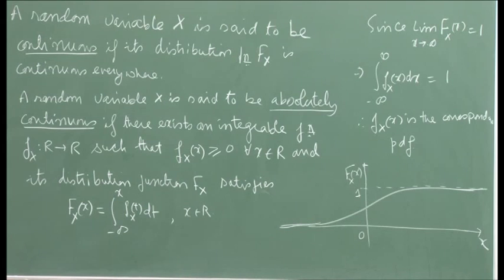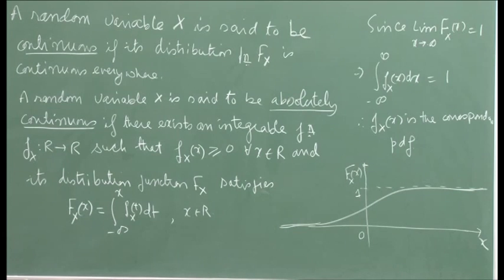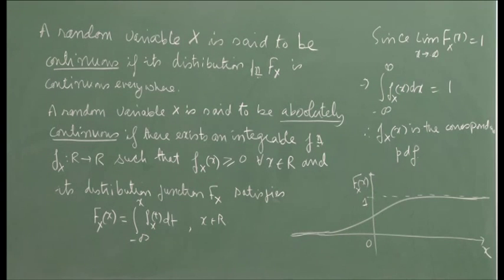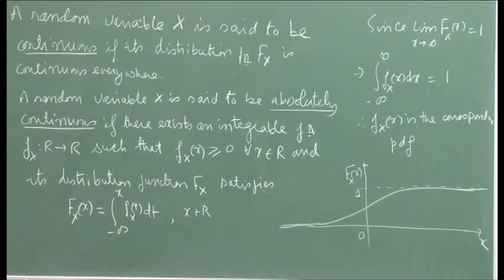One can also define a random variable X as a variable whose distribution function is continuous everywhere. The name 'continuous random variable' has come from here, because the distribution function of a continuous random variable is continuous. A random variable is called discrete because its cumulative distribution function is discrete — it has jumps — and we say a random variable is continuous if its distribution function F(x) is continuous everywhere.